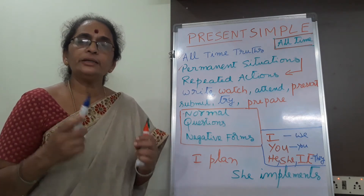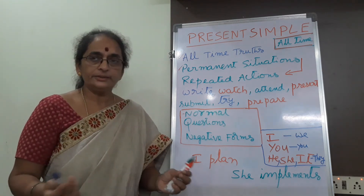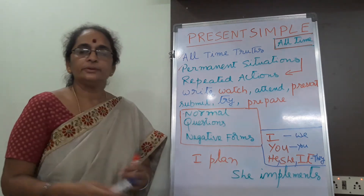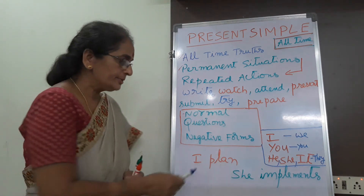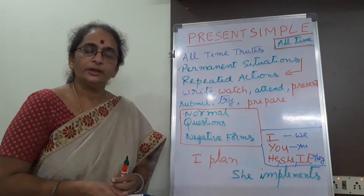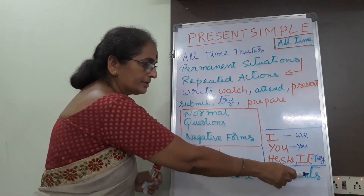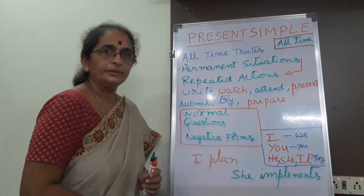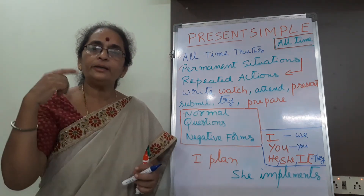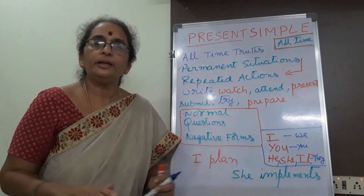For that I will give you a tip. Read this sentence: I plan — it is simple present tense. She implements — it is also in simple present tense. You just remember these two examples throughout, and you will never get any doubt at all. You apply this adding of S to the verb for third person singular number. I plan. She implements. You repeat, recalling these two in your mind — you never commit any mistake.